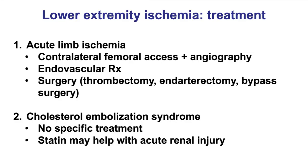To summarize, lower-extremity ischemia can occur as either acute limb ischemia or cholesterol embolization syndrome. Acute limb ischemia is diagnosed by contralateral access and angiography — if the problem is in the iliac artery, endovascular treatment with iliac stenting can be performed, but if located in the common femoral artery, surgery is performed in most cases. In contrast, for cholesterol embolization syndrome the distal pulses are intact, and there is no specific treatment, although statins may help prevent acute renal injury.